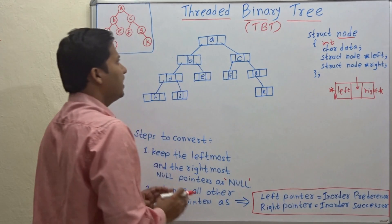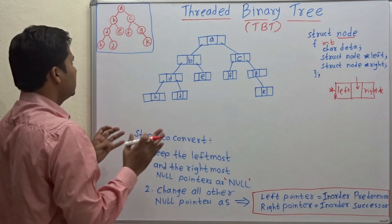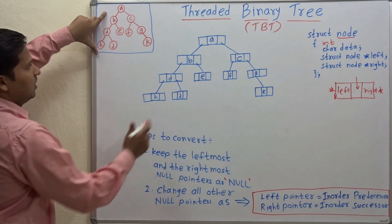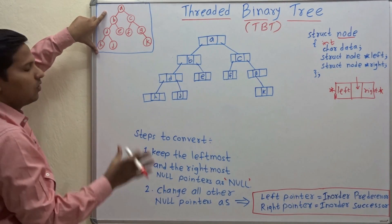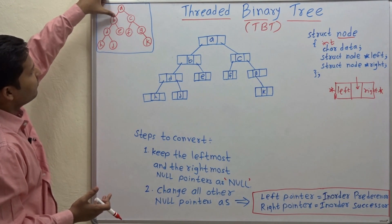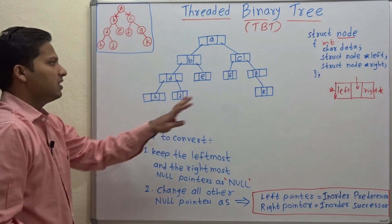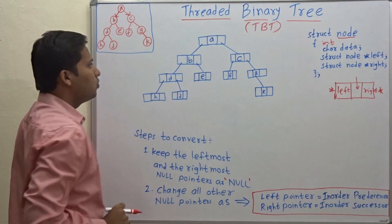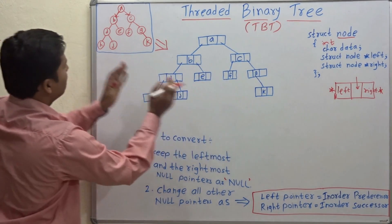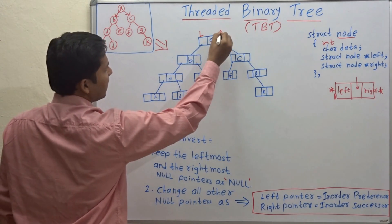In a threaded binary tree we write the node with its full structure. Generally we write the binary tree on paper without mentioning the left and right pointer fields - we just imagine the links as left and right pointers. But in a threaded binary tree we write the full node with the left and right pointer fields explicitly shown.